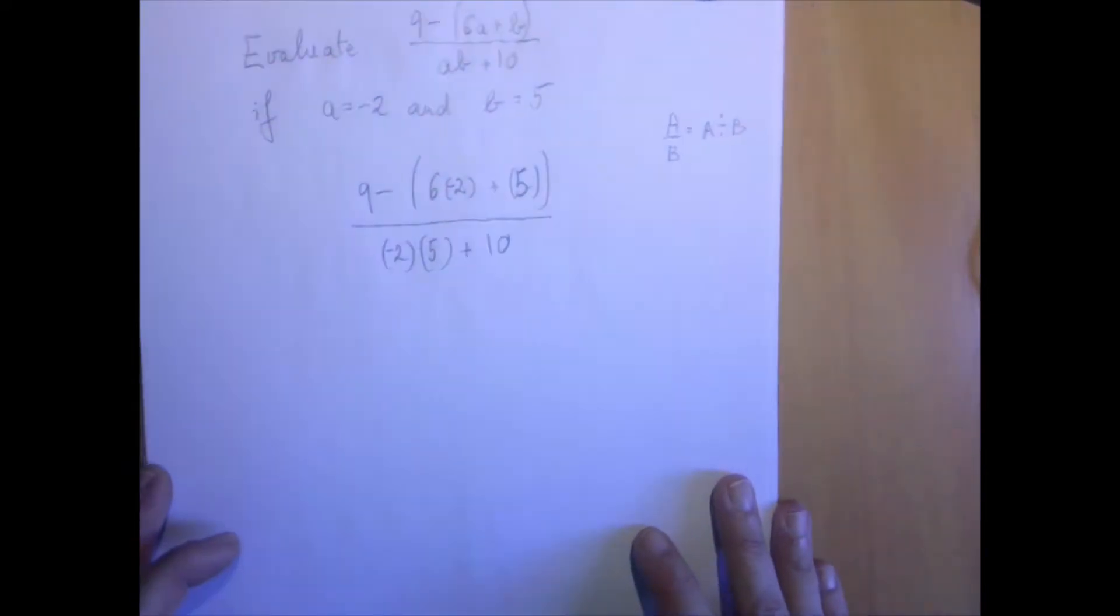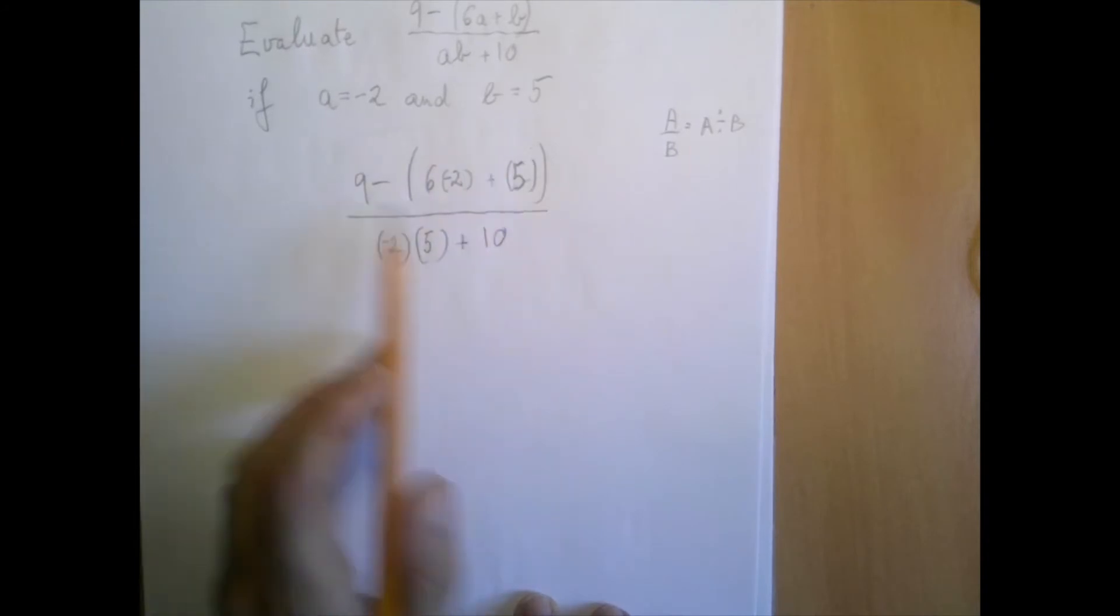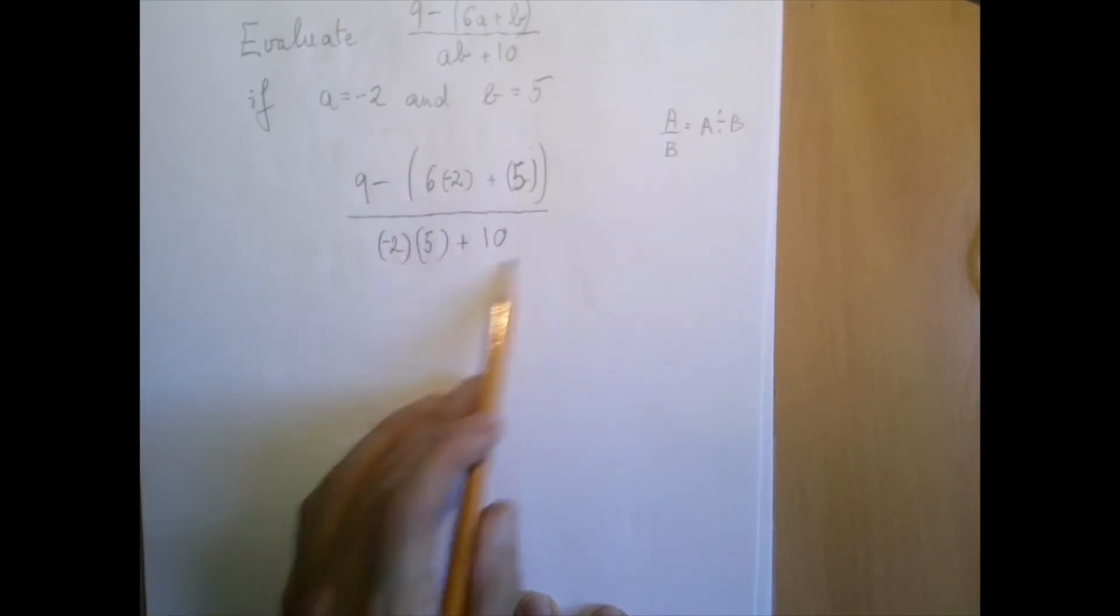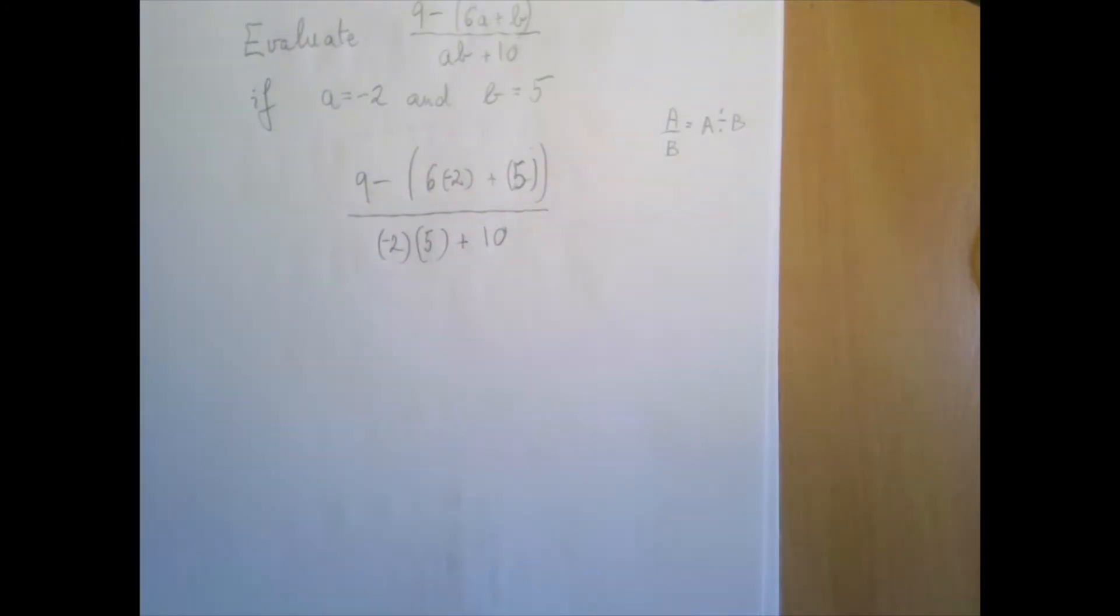So theoretically, we should work out what number this expression is, and only then can we start simplifying this. But intuitively, it doesn't matter, because we have to be finished both upstairs and downstairs before we can perform the last operation, which is division between the two.